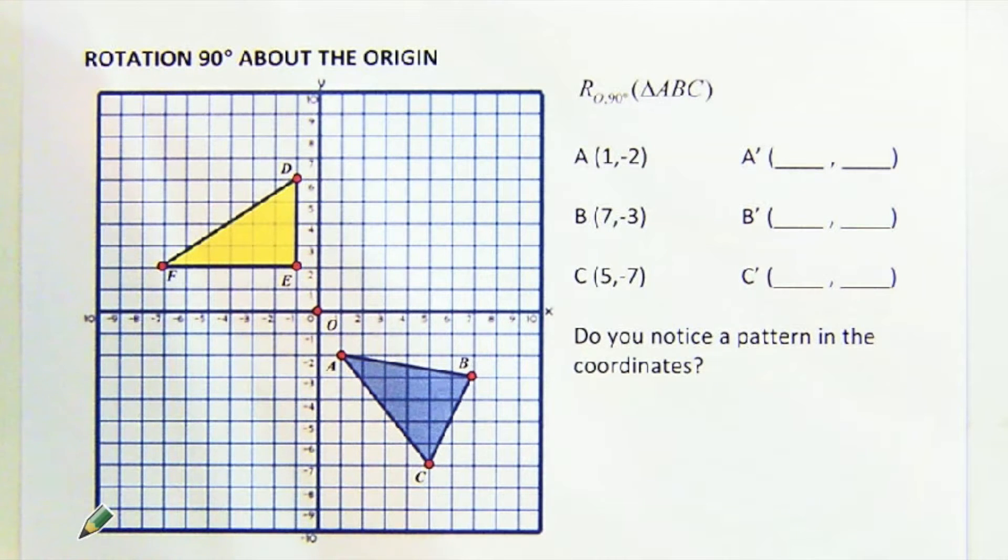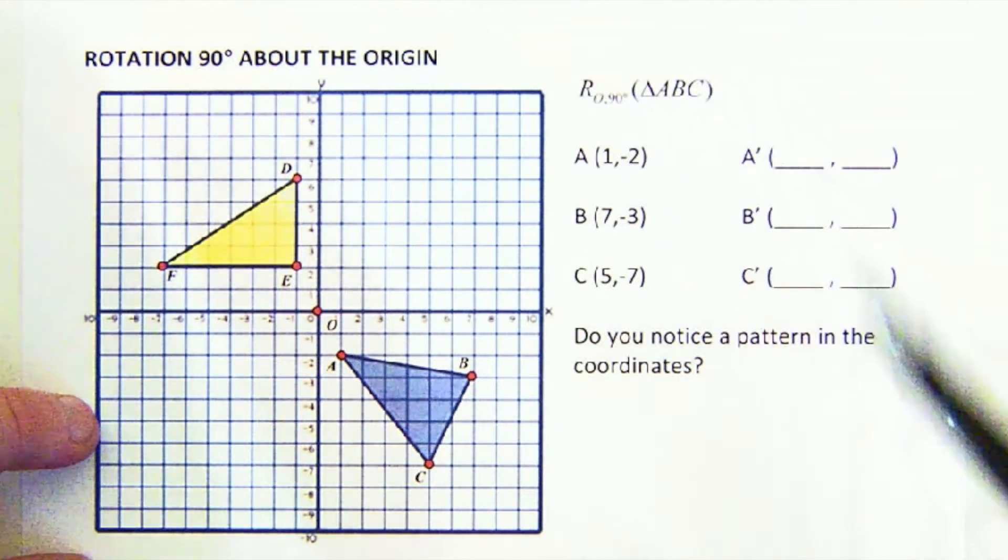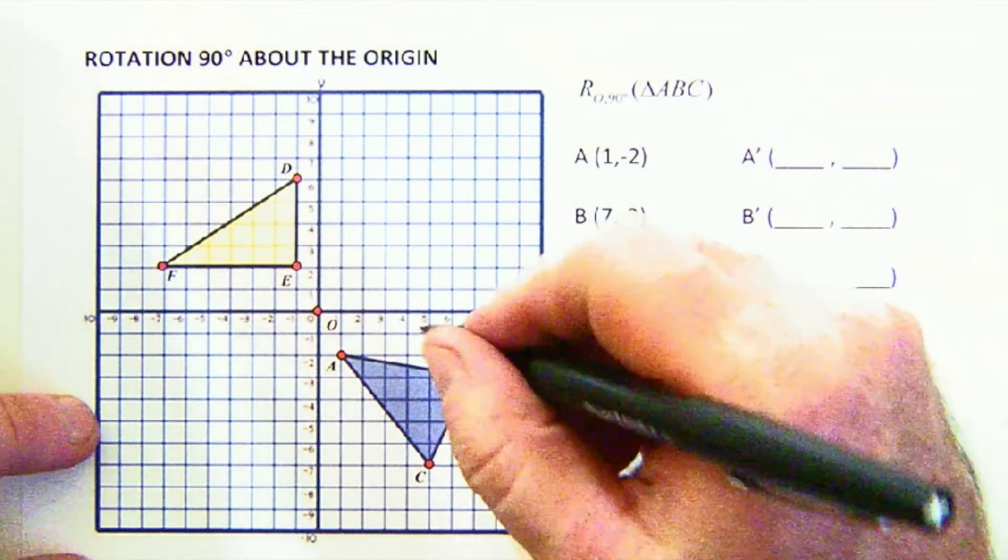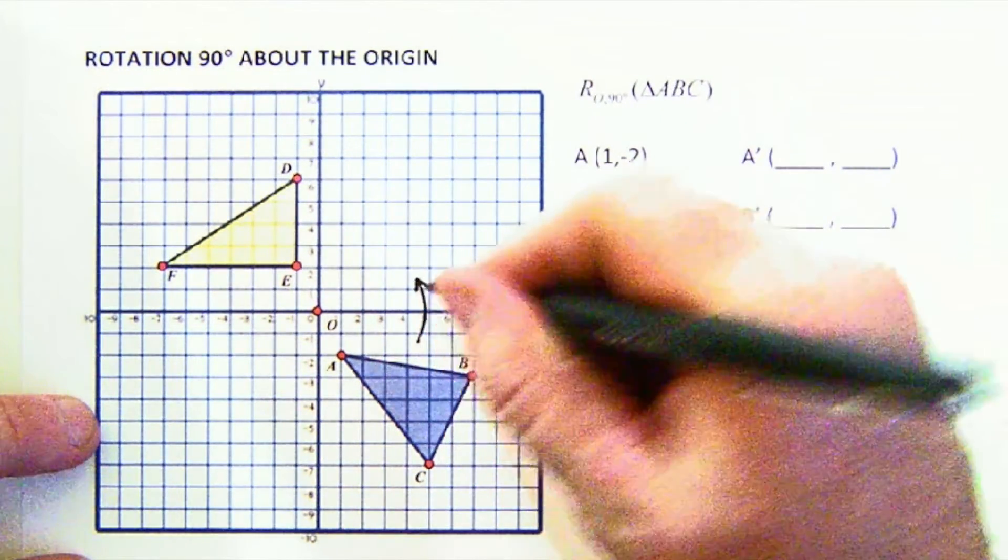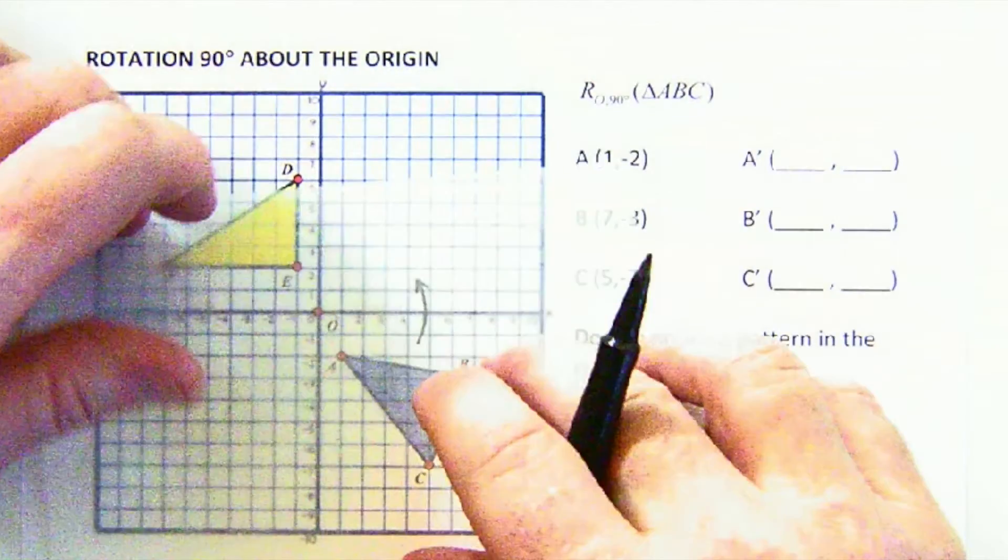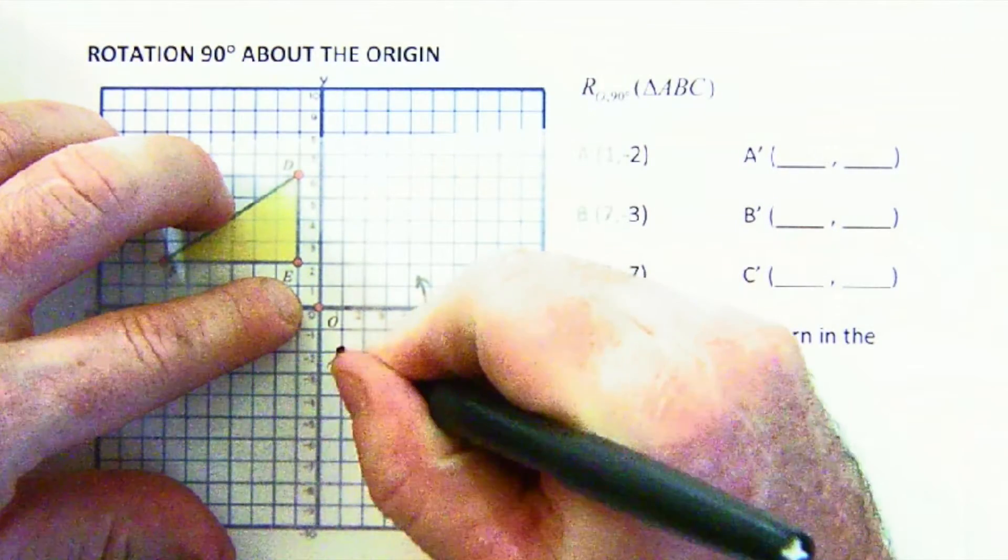Anyways, we are looking at a rotation this time of 90 degrees. We're going to take triangle ABC and rotate it 90 degrees. Remember that's going to move in this direction, in a counterclockwise direction.